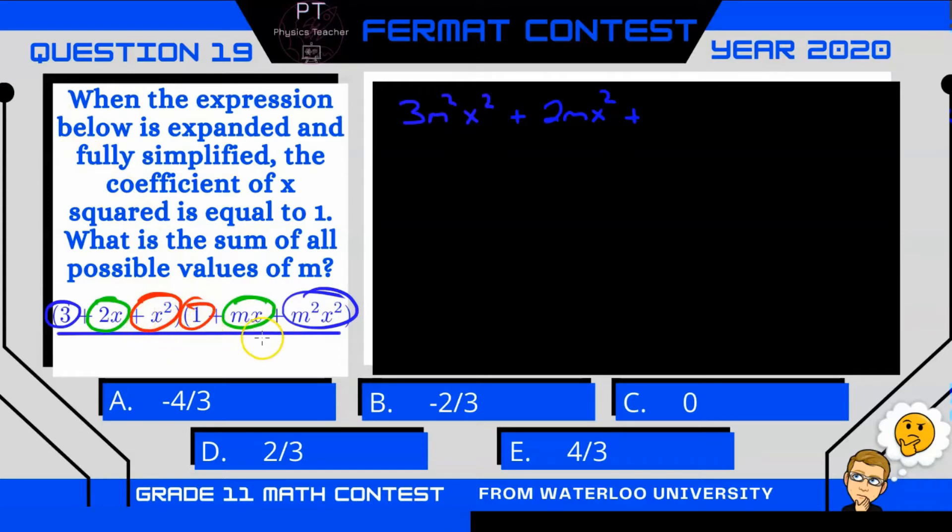Finally, let's look at x squared. x squared and 1 gives us an x squared term. It's the only one, because x squared and mx will give us a cube, and x squared and m squared x squared gives us a power of 4. So we're left with simply x squared.